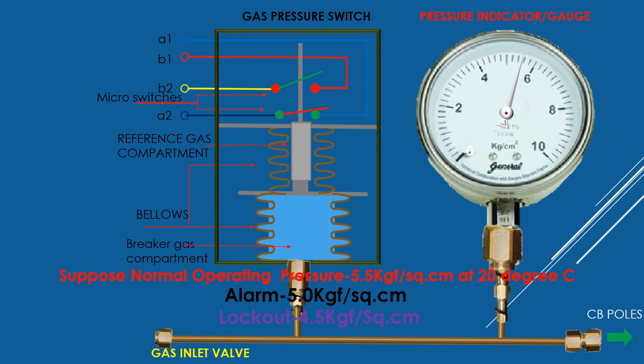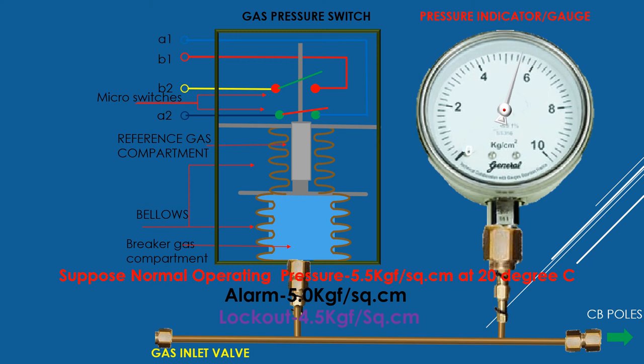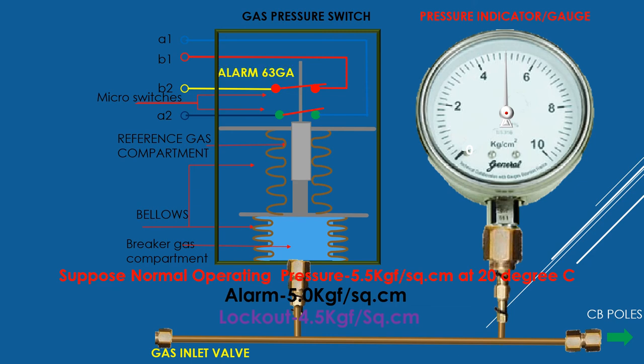One switch is used as the alarm circuit, designated 63GA, between connecting points B1 and B2. Gas pressure is gradually decreasing and the alarm appears first, then lockout. The second switch is used as the lockout, designated 63GL, with connecting points A1 and A2.